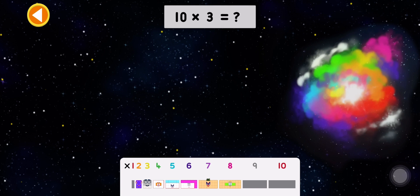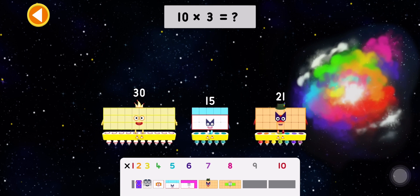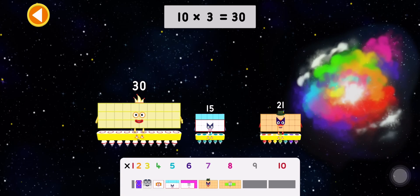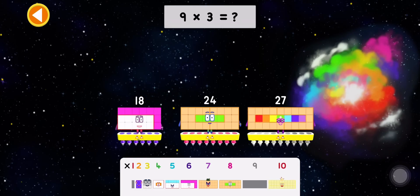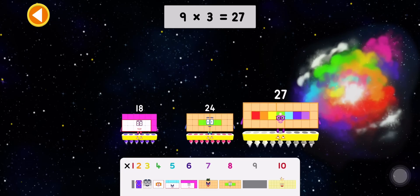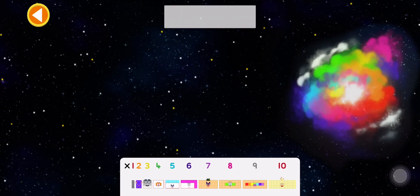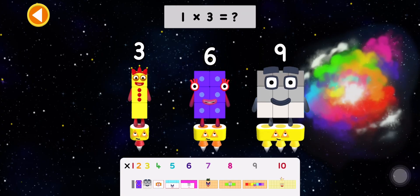Nine. Ten times three equals what? Thirty. Nine times three equals what? Twenty-seven. One times three equals what?